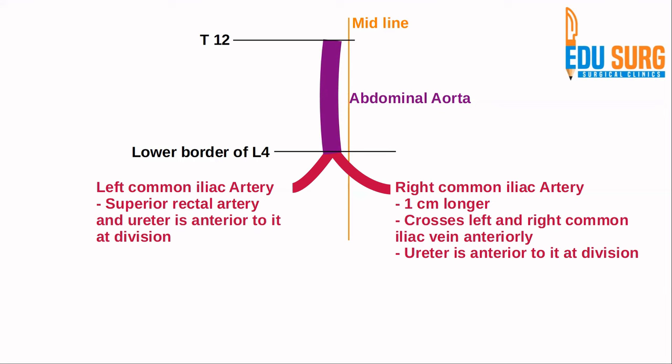This is the area where you can access the common iliac arteries, making it a very important surgical landmark. On the left side, along with the ureter, you will also find the superior rectal artery — which is the continuation of the inferior mesenteric artery — and it is anterior to the left common iliac artery at its division.